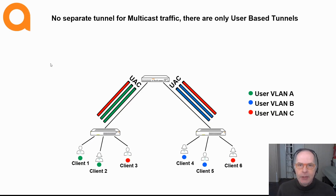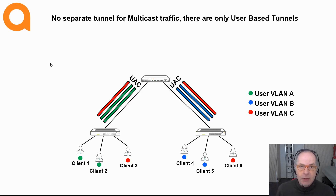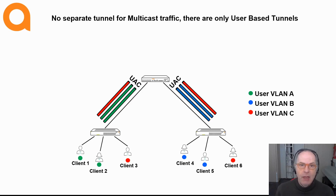Imagine the following situation where you have a couple of N devices that want to communicate using multicast. Each device has its own tunnel with user-based tunneling, so each tunnel will transport its own multicast, unicast and broadcast packets. In this scenario we can distinguish traffic going from the tunneled devices — from the clients up to the mobility controller — and traffic coming down from the mobility controller to the tunneled devices.